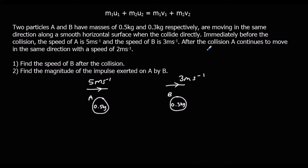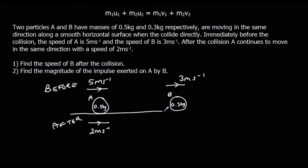After the collision, A continues to move in the same direction. So this is before, this is after. A continues to move in the same direction with a speed of 2 m/s. This is a smooth horizontal surface. Here's the velocity before, and here's the velocity after. We need to find the speed of B after the collision.